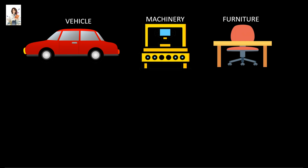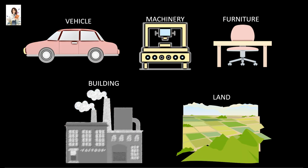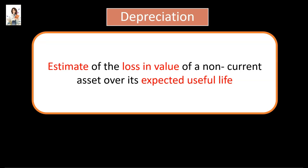Every business uses non-current assets like vehicle, machinery, furniture, building and land. As they are used by the business, these non-current assets lose value over time — except land of course. Land does not wear out with use. This loss in value of the non-current assets is called depreciation. Depreciation is an estimate of the loss in value of a non-current asset over its expected useful life. It is an estimate because the exact amount of loss in value will only be known when the asset is disposed.